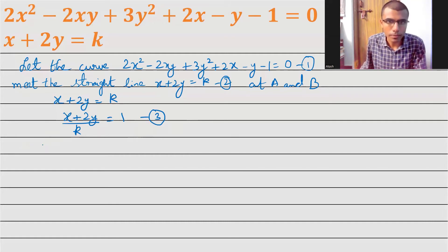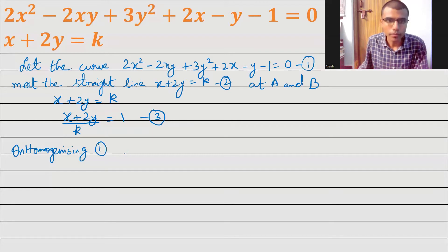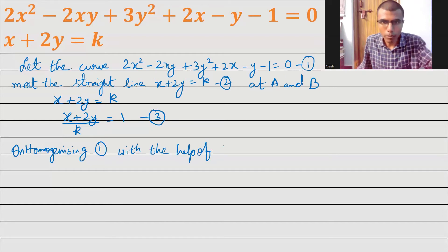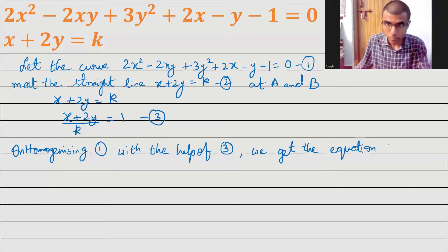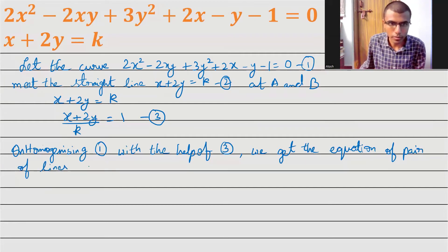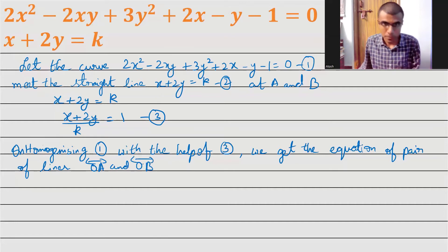Now, on homogenizing equation 1 with the help of equation 3, we get the equation of pair of lines OA and OB. This is what I am going to get upon homogenization.